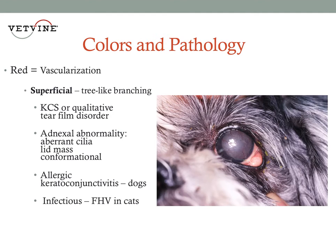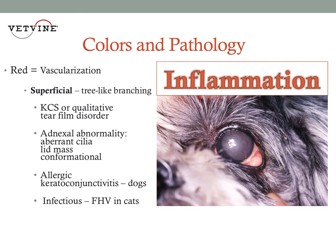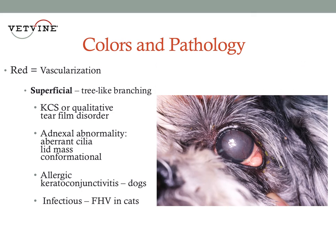Remember that the cornea is normally clear and colorless. When we see red in this tissue, we are seeing evidence of inflammation because we're actually seeing the presence of blood within blood vessels in that tissue. So when we see corneal vascularization, we further classify it as being either superficial or deep.